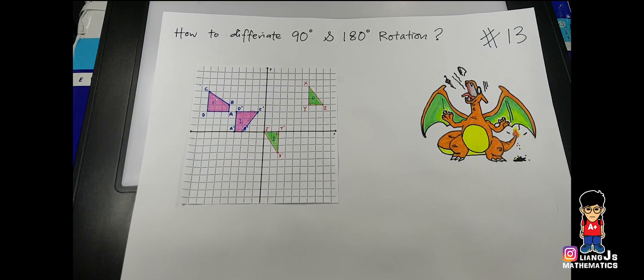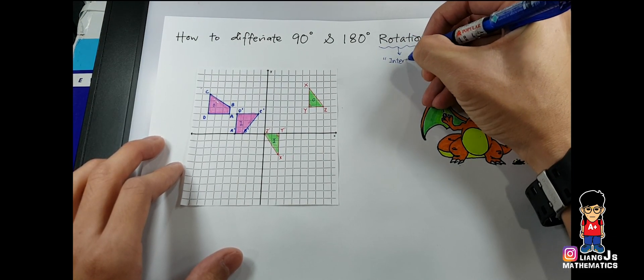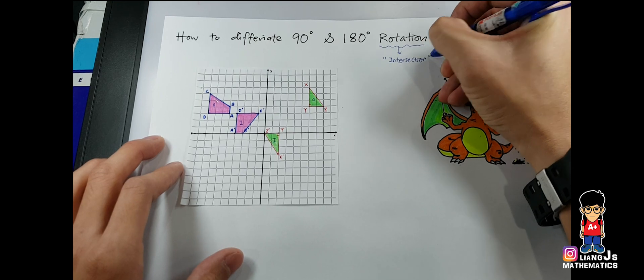How do you differentiate 90 and 180 rotation? Very easy. When you see the word rotation, just keep this in mind: intersection equals rotation.